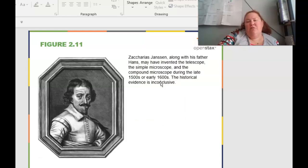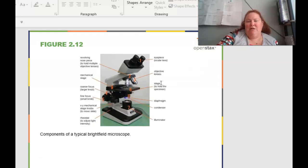Zacharias Janssen, along with his father Hans, may have invented the microscope, the telescope, the simple microscope and the compound microscope during the late 1500s and early 1600s. But back then records weren't really kept and there's a lot of differences in who decided or who found what. It's kind of like Watson and Crick were credited for discovering the double helix. But there were also other scientists that were at the same time making the same discoveries, but Watson and Crick were the ones that got credited towards them.